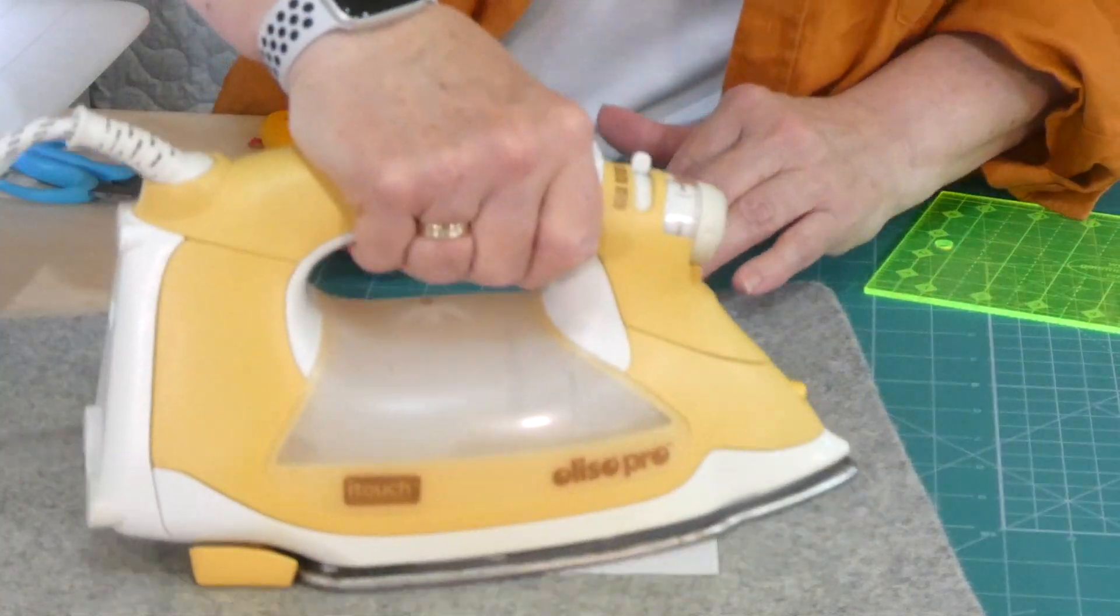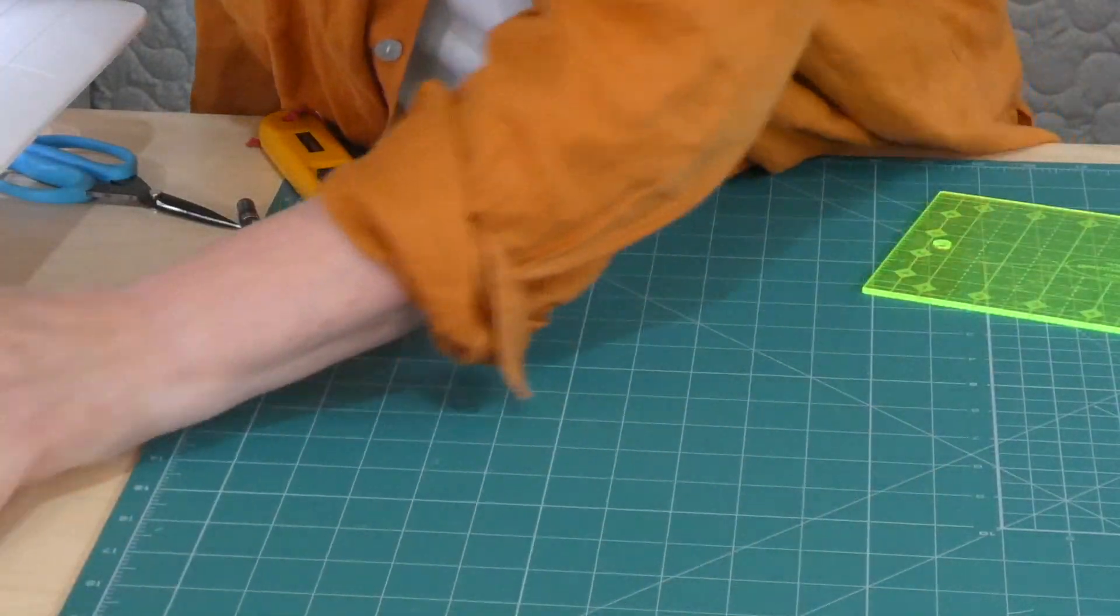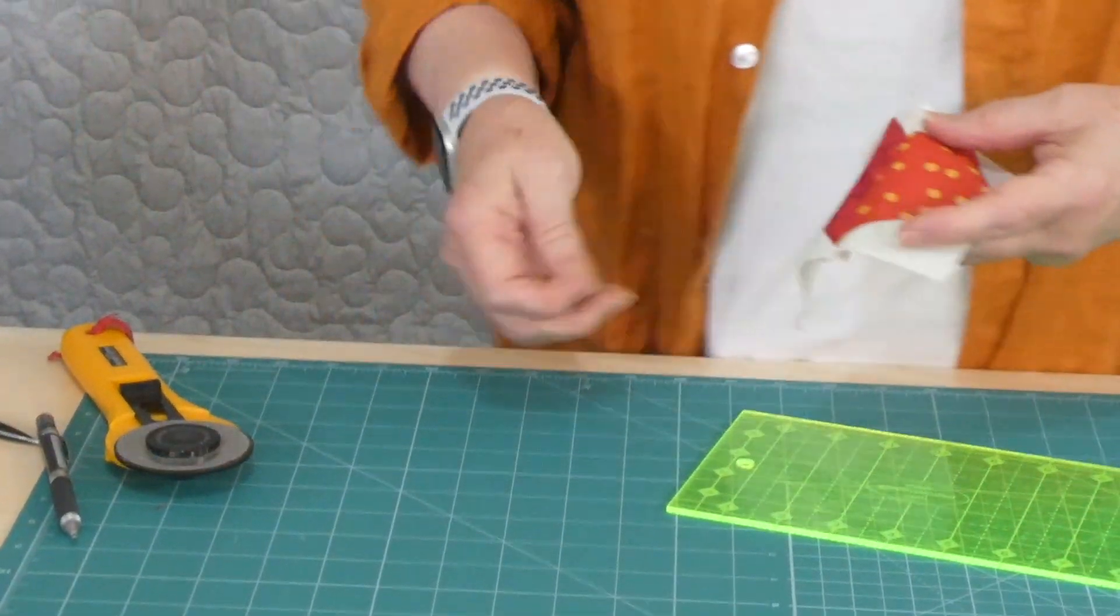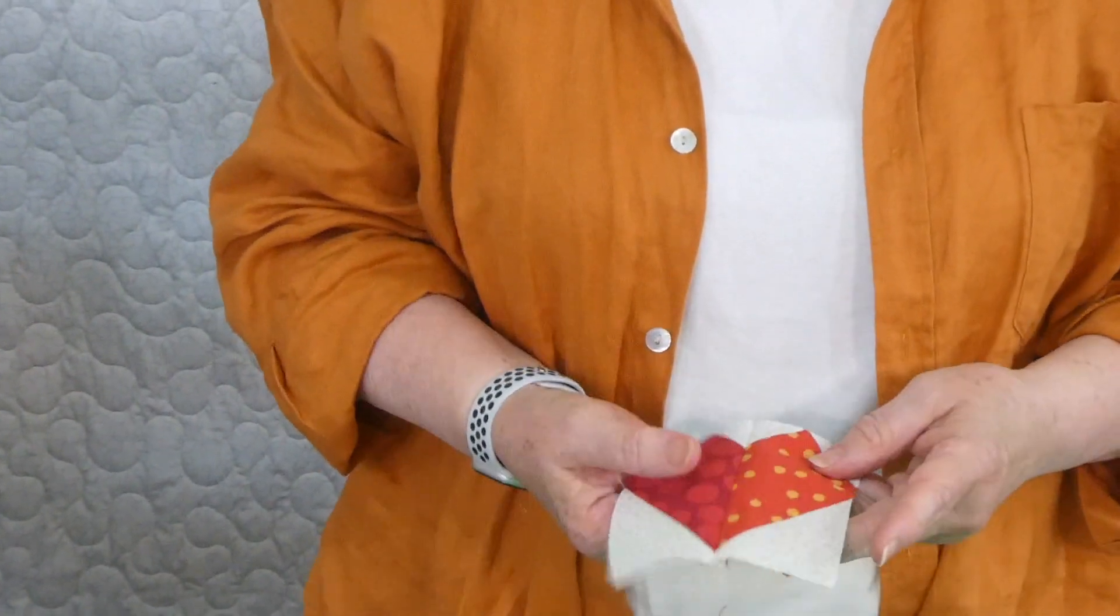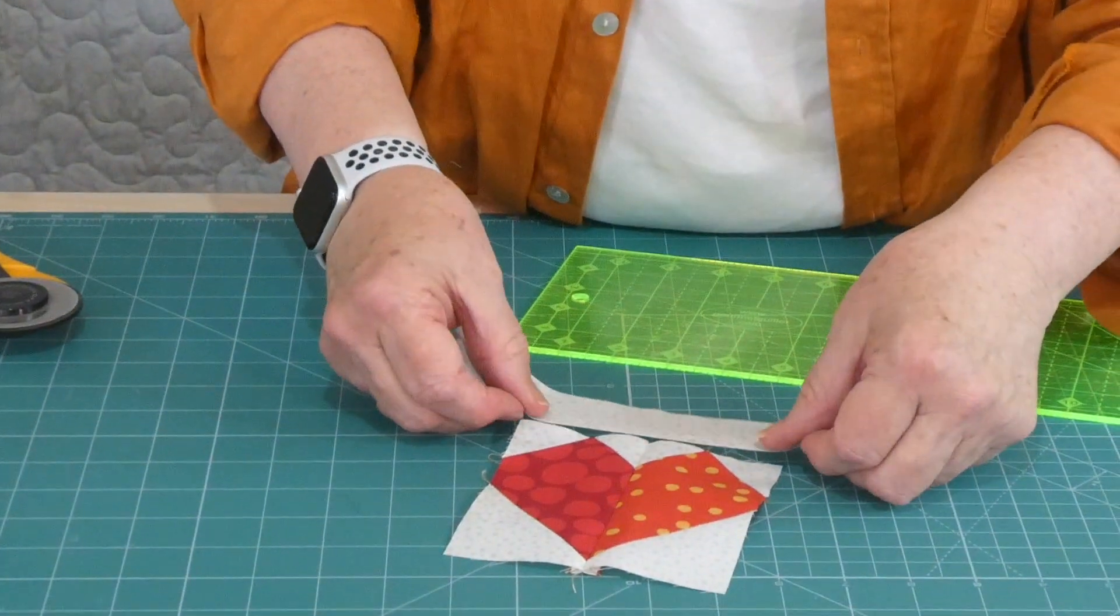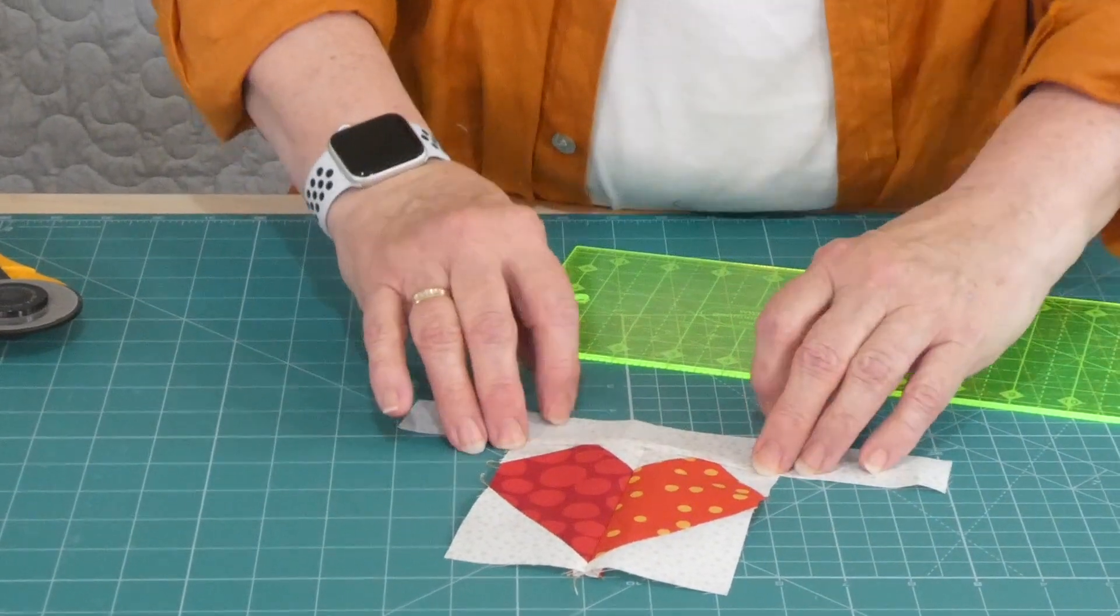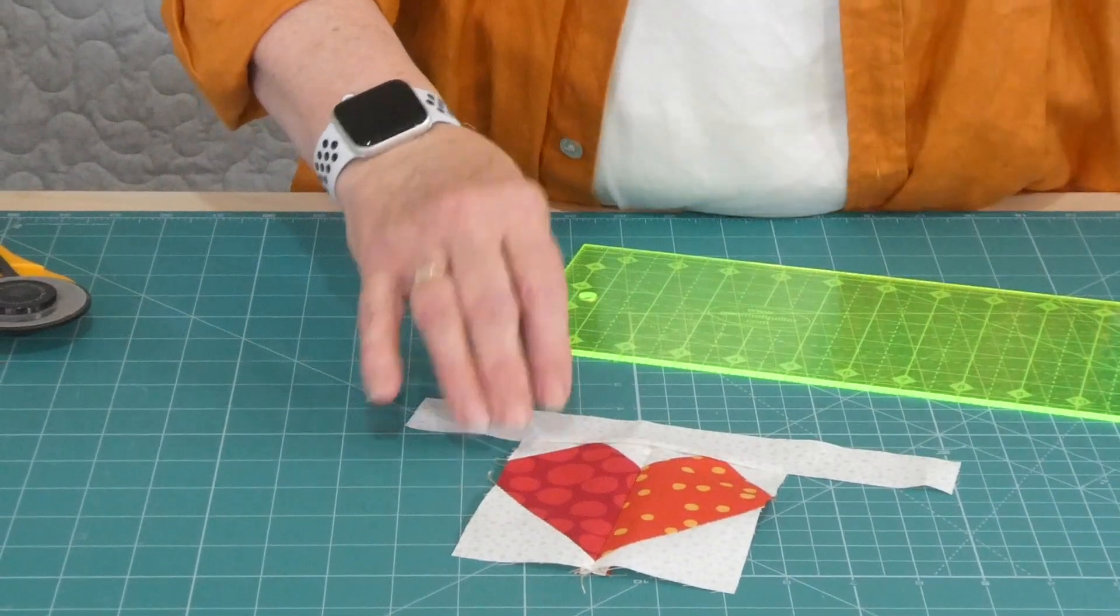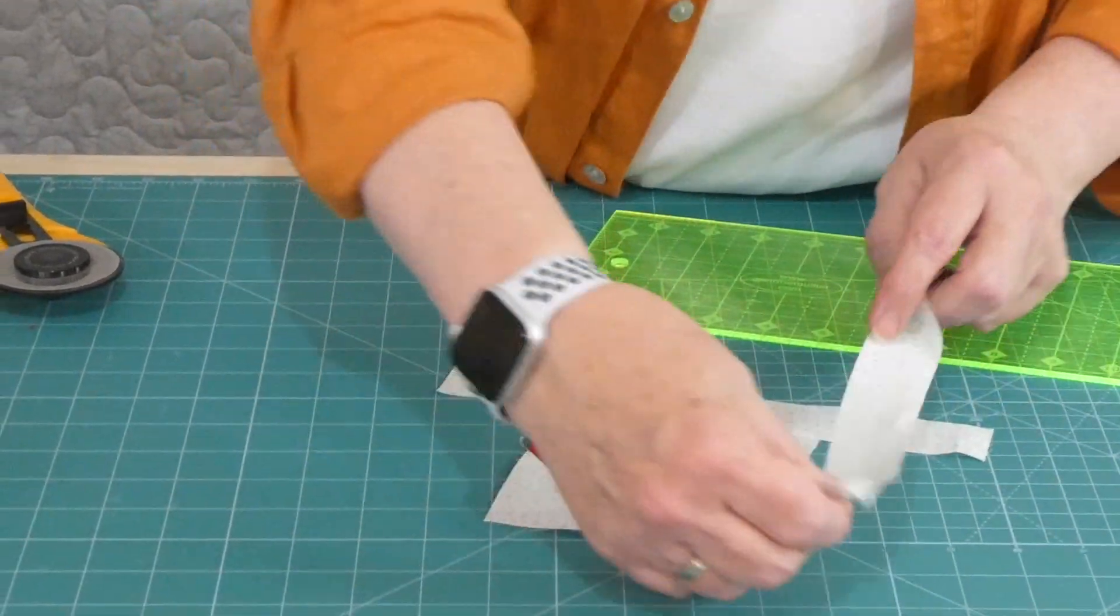And there we have a very delicious small heart block. So the block measures four and a half inches, because that was the size that we were working with. So you could now go ahead, you could frame them. Once you pop a little frame on, when you take that seam allowance away, you are going to lose just those top sharp points there.